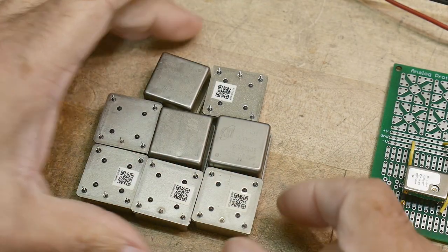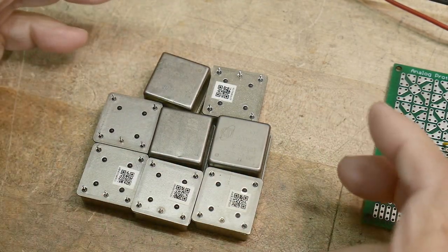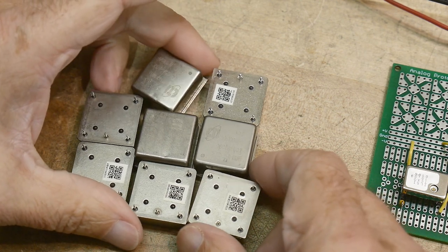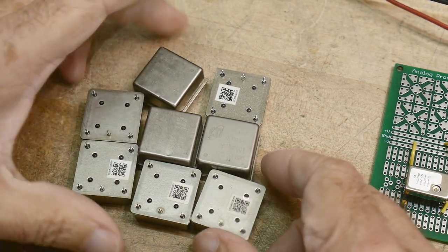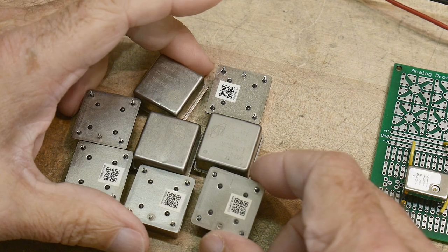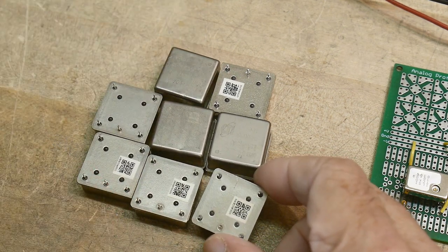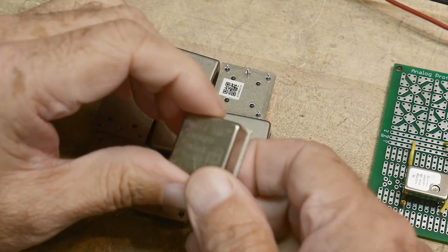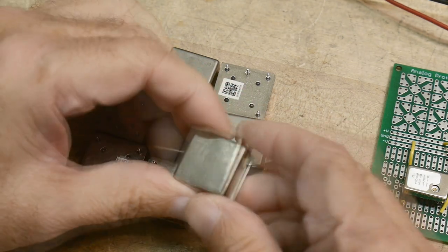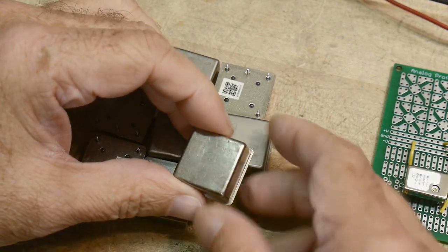All right, chip of the day. One of the good things coming out of China are these things. They're used, they're being pulled out of equipment, probably cell sites, and these are 10 megahertz oscillators. Let me read you the number here.